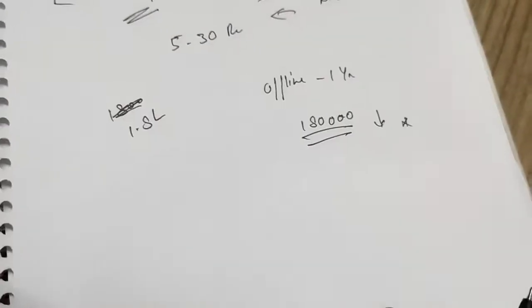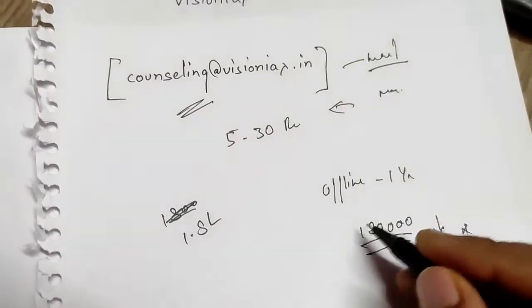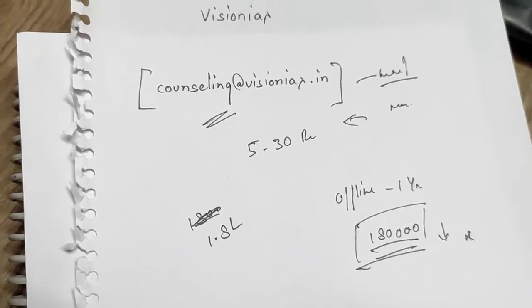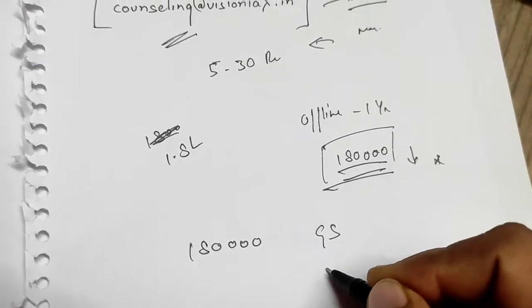I will tell you what you get for 1,80,000. First, your GS is covered, and you have to buy Essays and CSAT.